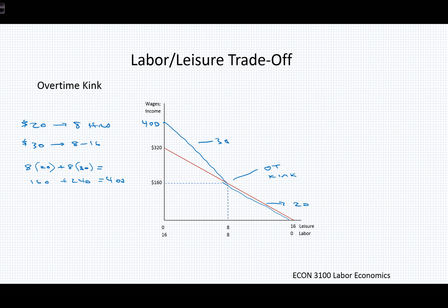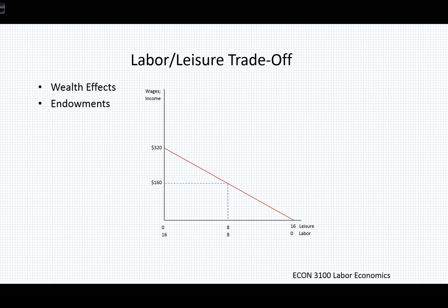The overtime kink tells us that for the first eight hours of labor we have a 20 to 1 tradeoff, and for the next eight hours of labor we have a 30 to 1 tradeoff — changed by time and a half. This also suggests something about the opportunity cost of leisure time. Let's think about the effect on this model if we have some changes in endowments.